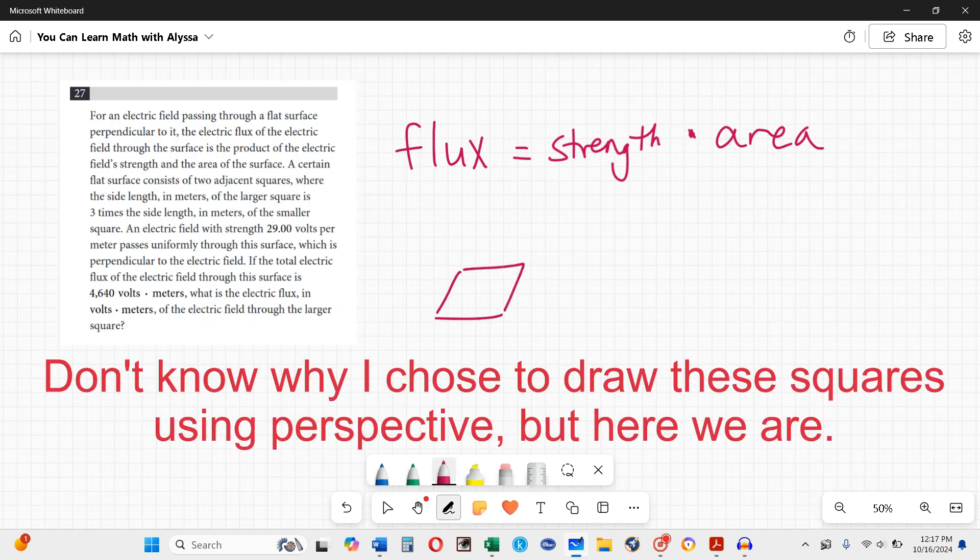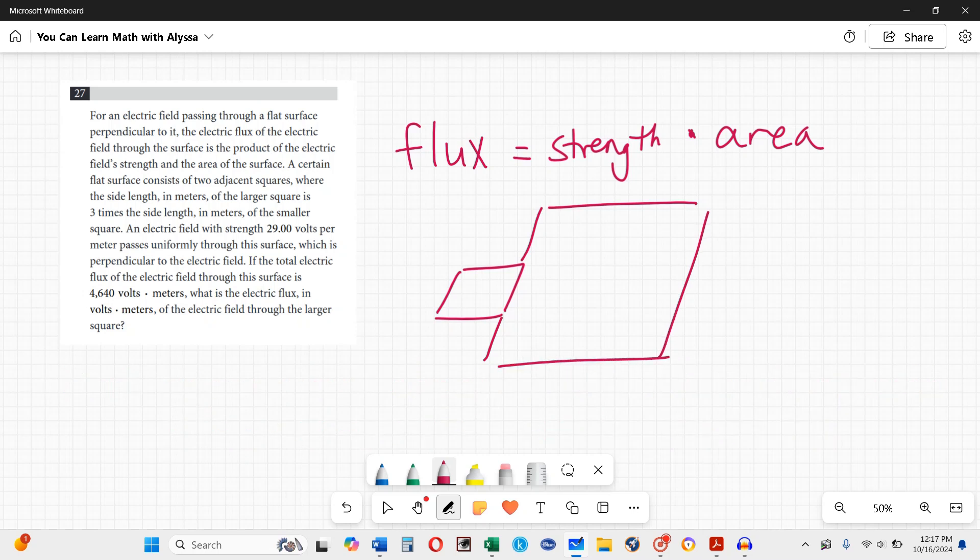We got one square and the larger one. The side length in meters of the larger square is three times the side length of the smaller. I'm going to call this x on both sides and this one is three times, so it's 3x on both sides. An electric field with a strength of 29 volts, there's my strength, passes uniformly through this. If the total flux is 4640, what is the flux that's going through the larger square?